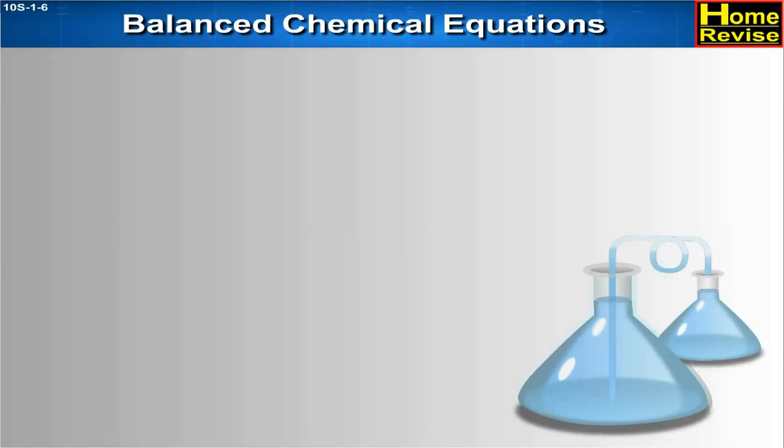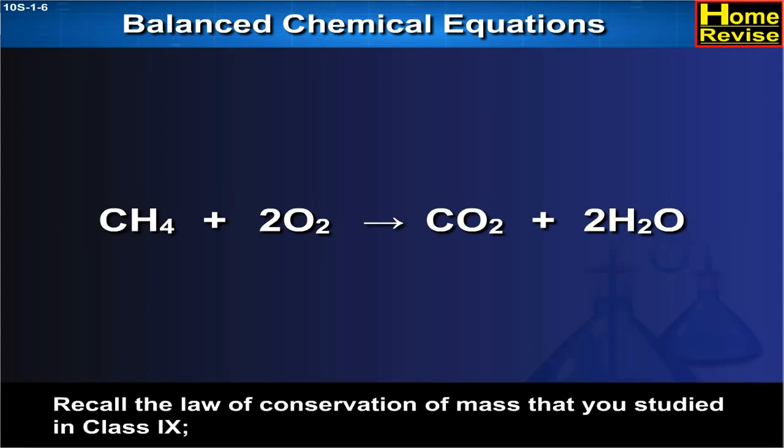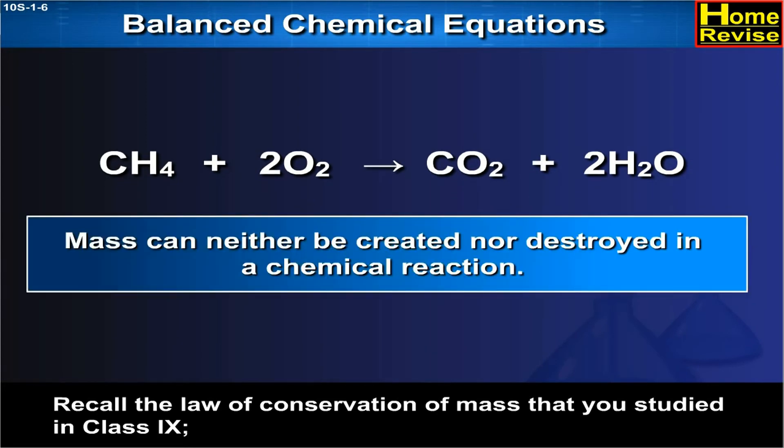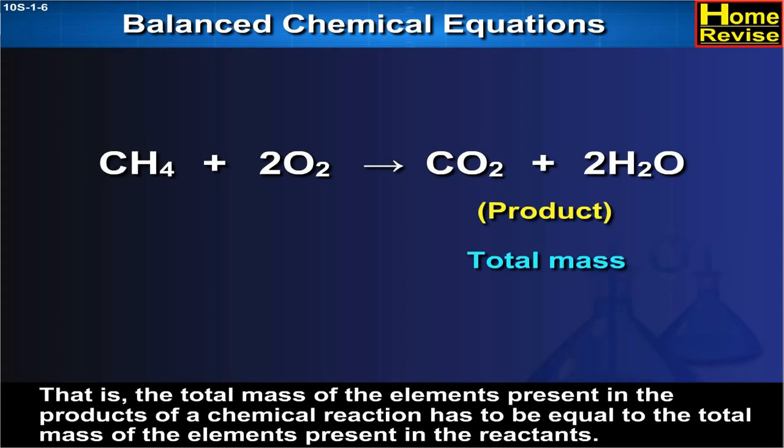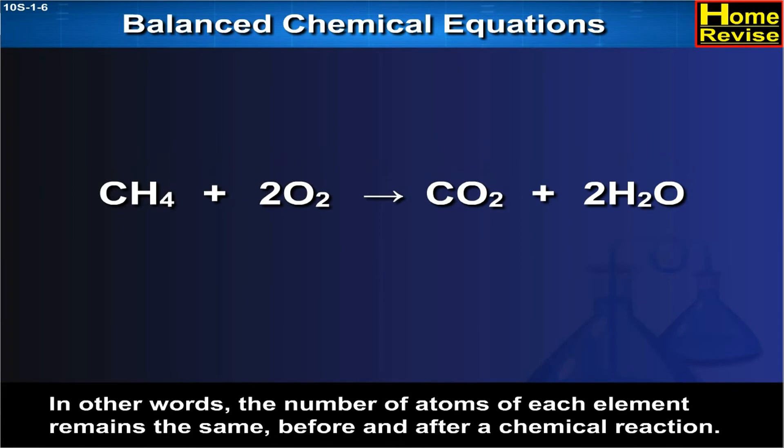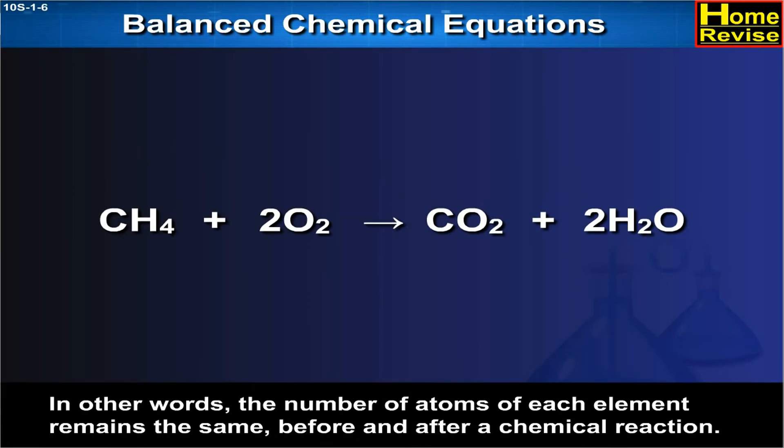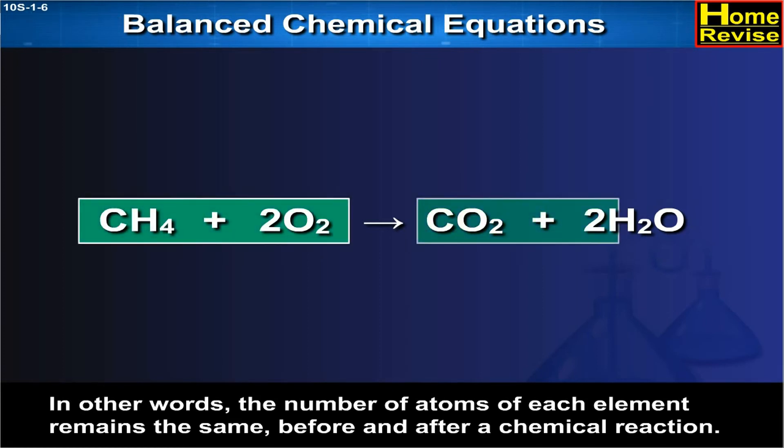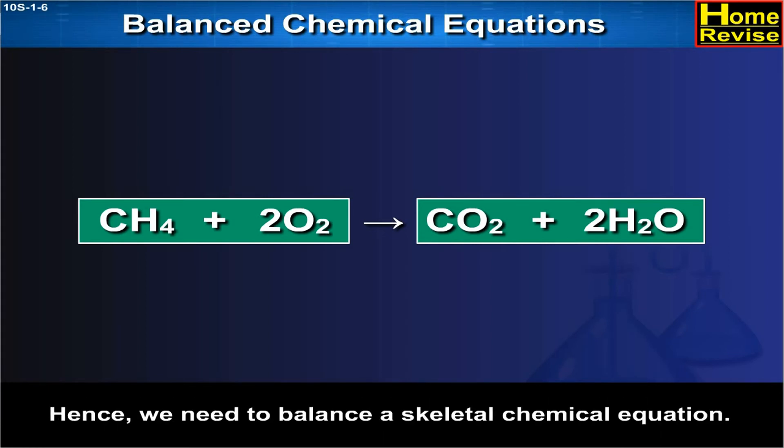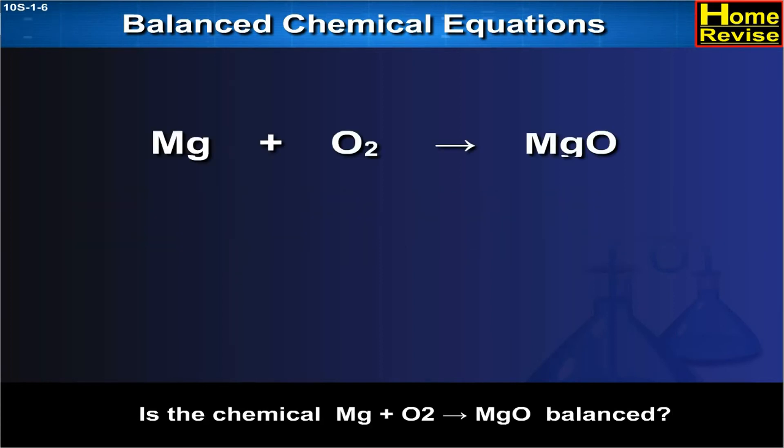Balanced chemical equations. Recall the law of conservation of mass that you studied in class 9th. Mass can neither be created nor destroyed in a chemical reaction. That is, the total mass of the elements present in the products of a chemical reaction has to be equal to the mass of the elements present in the reactants. In other words, the number of atoms of each element remains the same before and after a chemical reaction. Hence, we need to balance a skeletal chemical equation. Is the chemical equation Mg plus O2 gives MgO balanced?